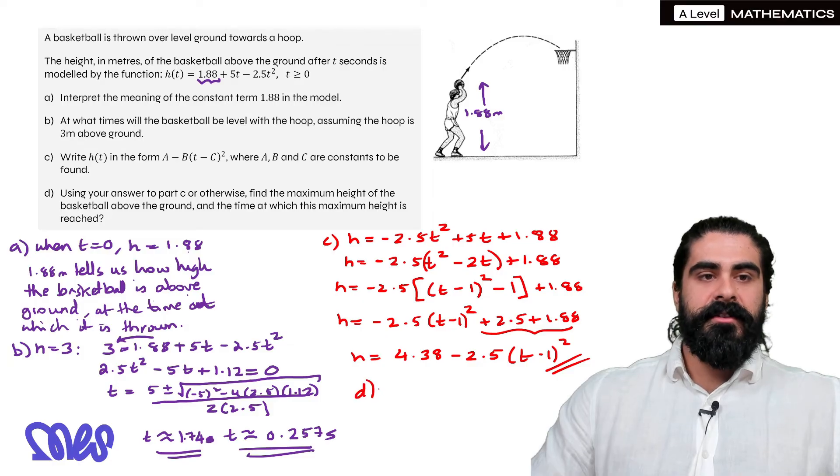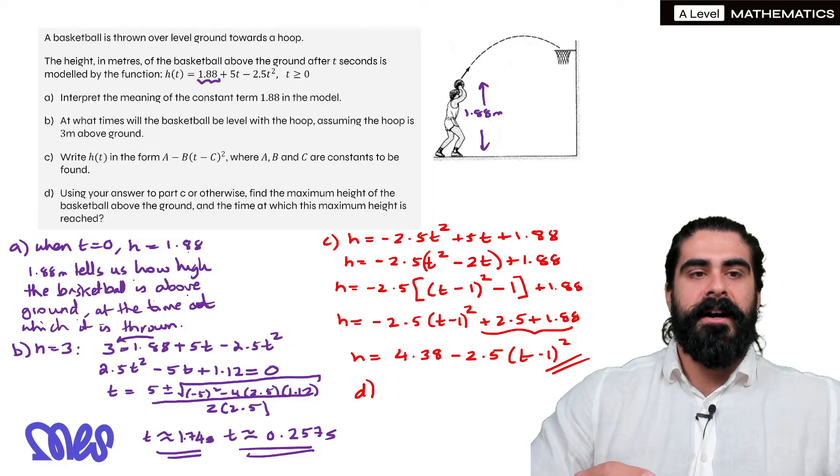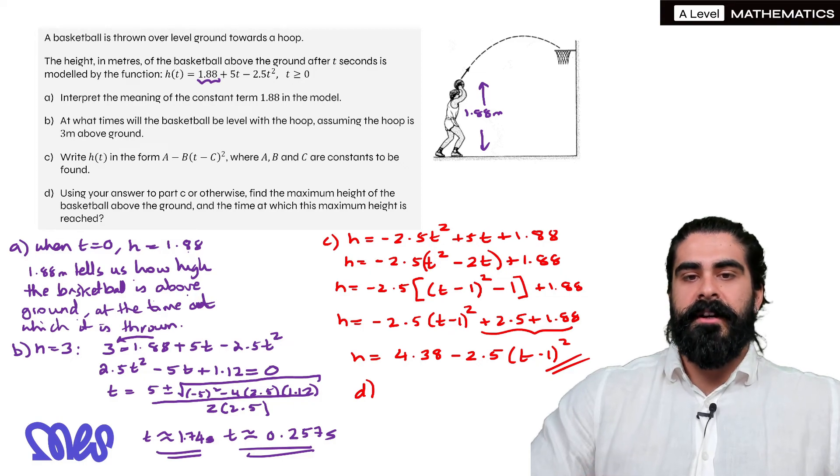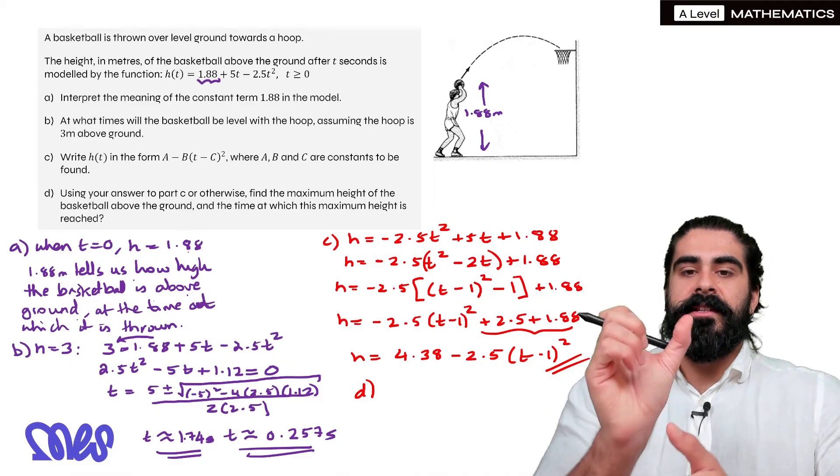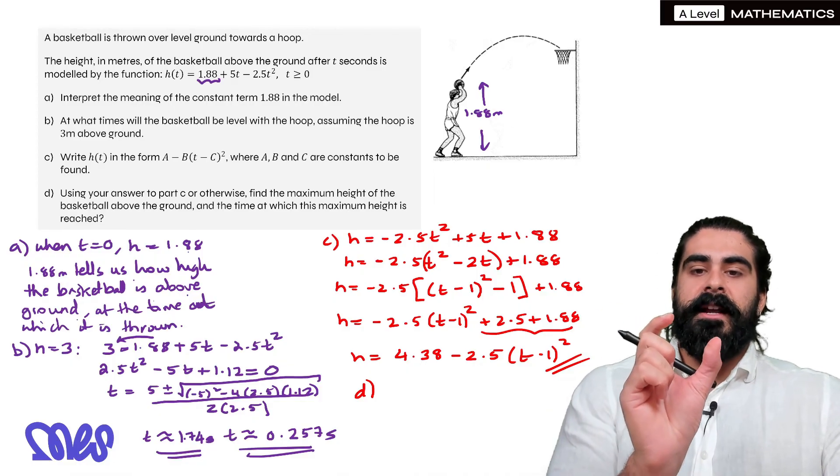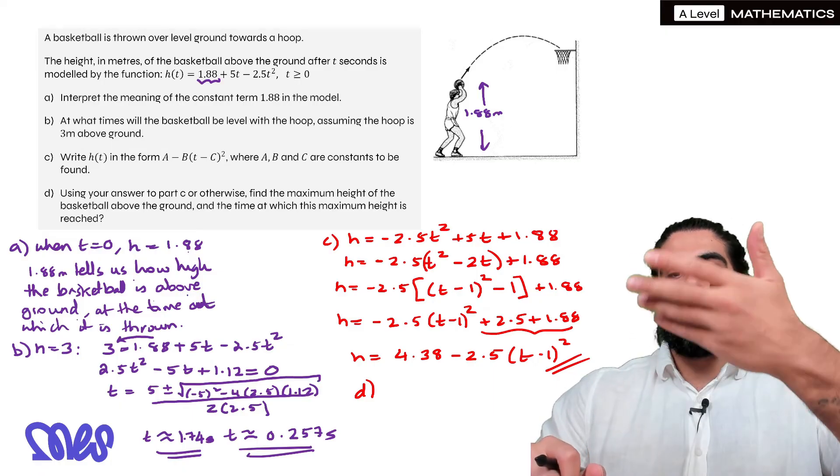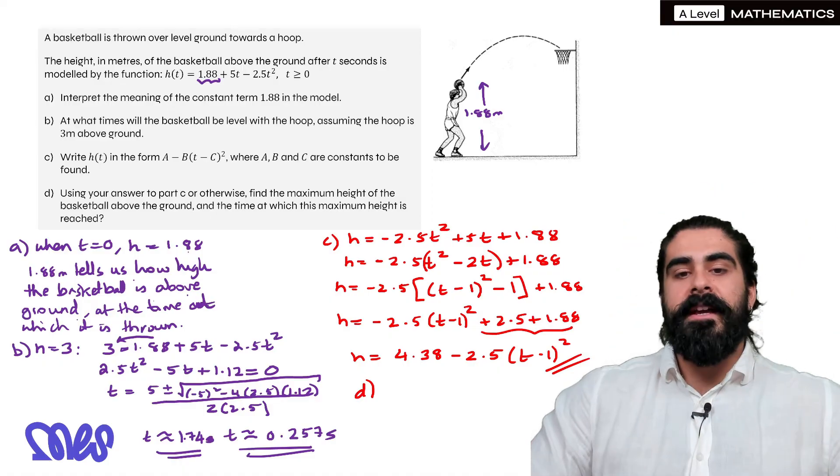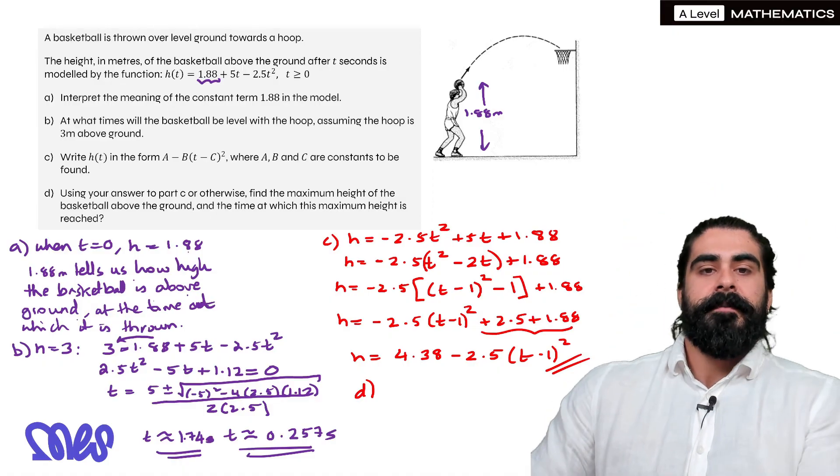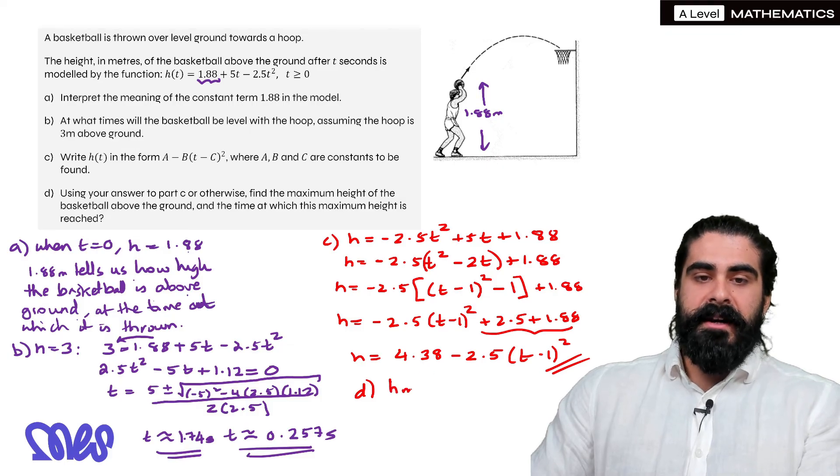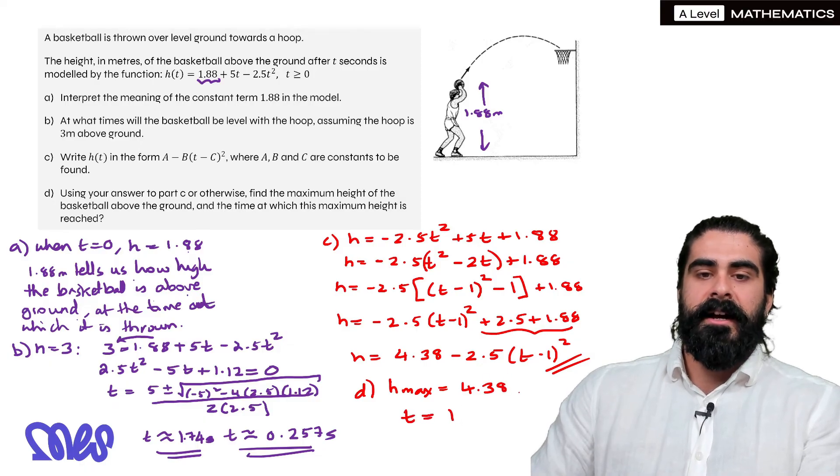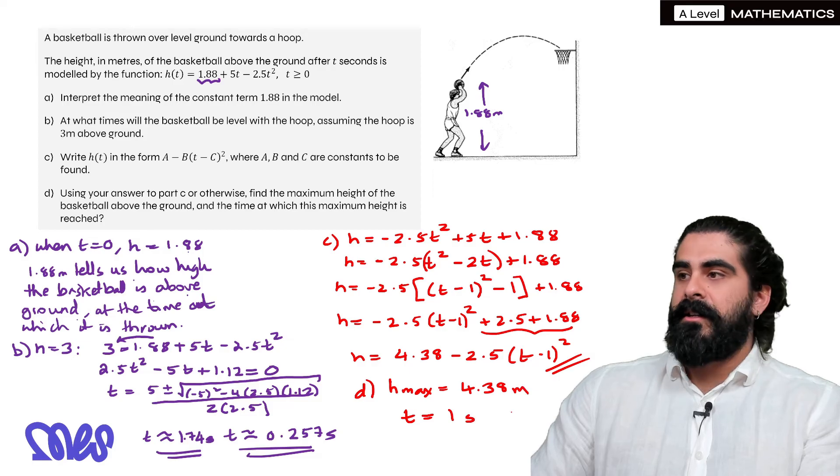Then part d says, using your answer to part c or otherwise, find the maximum height of the basketball above the ground and the time at which the maximum height is reached. So remember from previous episodes what we said. So the t minus 1 takes the quadratic and it moves it to the right by 1. The minus 2.5 just turns it upside down and the 4.38 is what takes it up. So the max height, h max, is 4.38, and the time at which that happens is at 1. So that'll be meters and that'll be seconds.